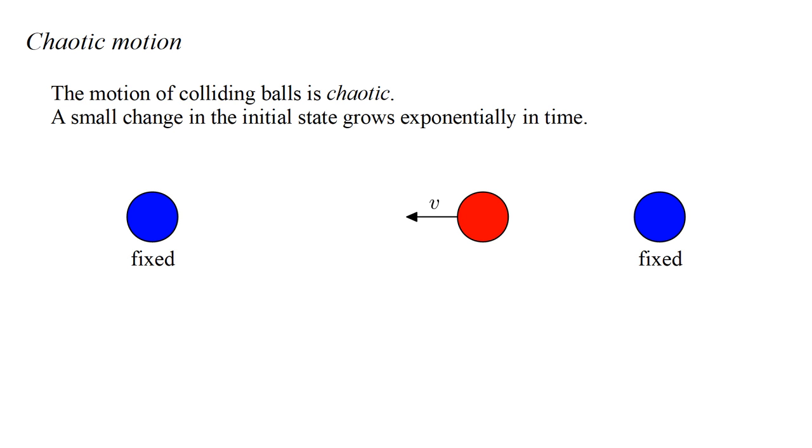Let's explore this with a simple model. Two blue balls are fixed in place. A red ball moves between them, bouncing back and forth. Can we predict the motion of this ball arbitrarily far into the future?